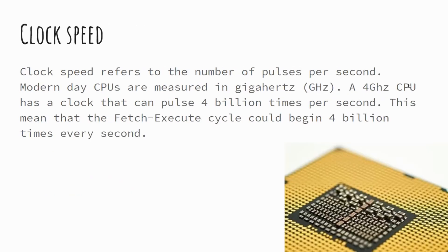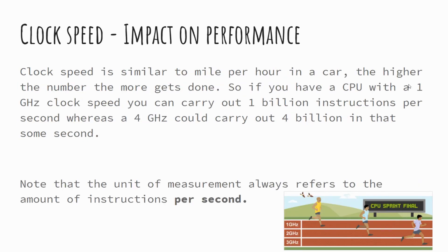Firstly, clock speed — we mentioned this in our previous lesson. Clock speed is the amount of fetch, decode, execute cycles that can be carried out per second. It's measured in hertz, or typically gigahertz, because we're talking about how many billions of instructions. Modern day CPUs can do a number of billion instructions per second — typically up to four billion. Some CPUs will quote 1.7 GHz and 2.3 GHz because of a power-saving mode, as seen in Chromebooks and mobile phones. Ultimately, clock speed is the measurement of how many fetch, decode, execute cycles can be carried out per second. The higher the gigahertz, the more instructions that can be carried out per second.